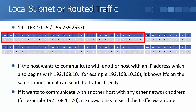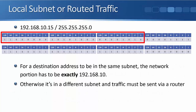If the host wants to communicate with another host whose IP address also begins with 192.168.10, it knows it's on the same subnet and can send traffic directly. For example, sending to 192.168.10.20 goes directly. If the host wants to communicate with anything that does not begin with 192.168.10 — for example 192.168.11.20 — it knows it has to send the traffic via a router. The network portion must be exactly 192.168.10; anything else means a different subnet.